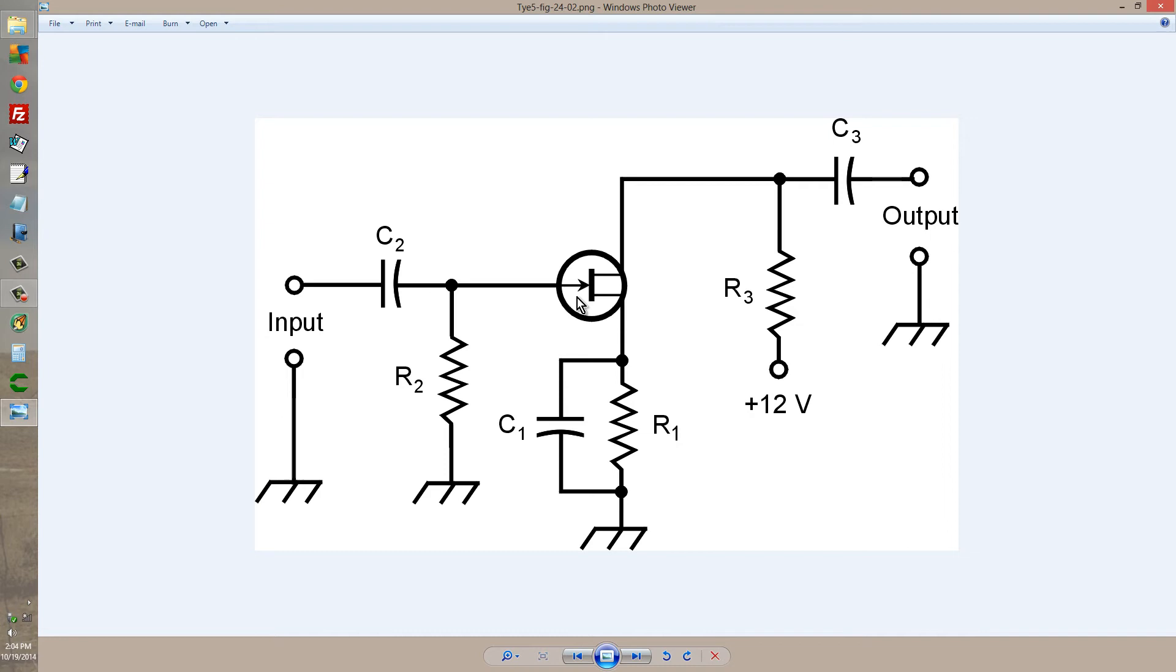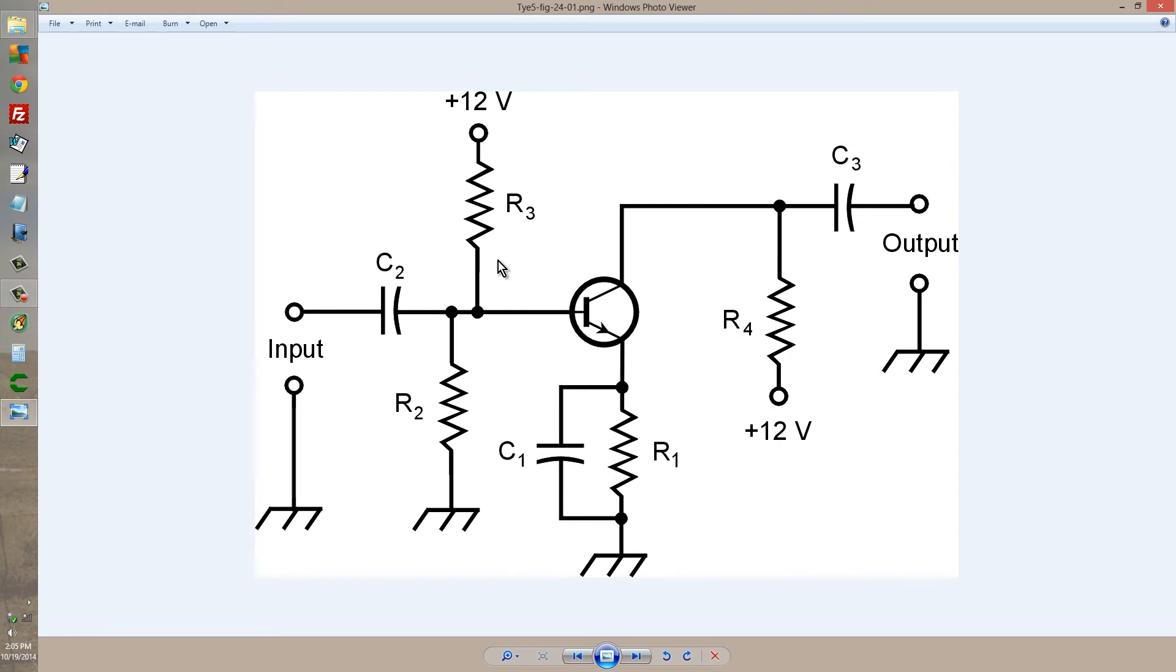you don't need it to provide Class A bias. All you need is to elevate the gate sufficiently above ground to get it to Class A bias. You do not need this resistor to force it higher above ground towards the positive.